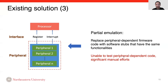The third line of work is partial emulation, in which they replace peripheral-dependent firmware code with software stubs that implement the same functionalities. In this way, they don't have to emulate the peripherals. The limitation is they cannot test peripheral-dependent code, and significant manual effort is needed.